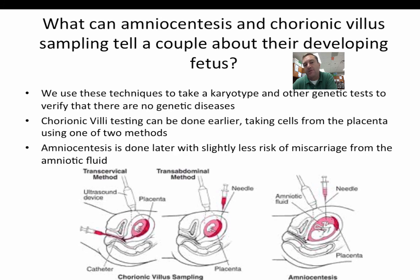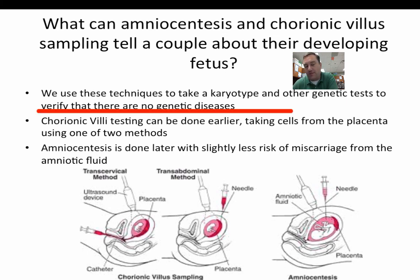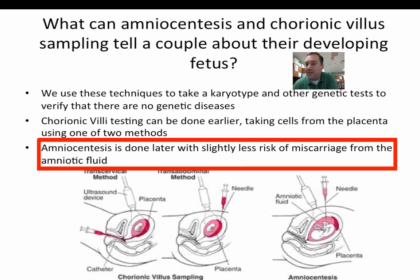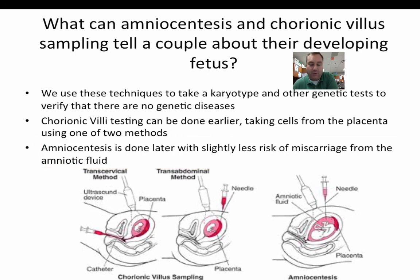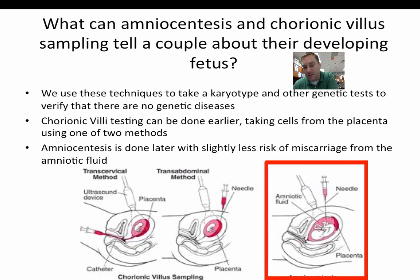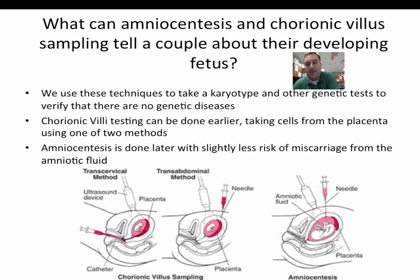The last topic was amniocentesis and chorionic villus sampling — two tests you'd want to do only if indicated by an ultrasound or other blood work. Both are trying to get cells from the fetus for a karyotype or other genetic testing. Chorionic villus sampling can be done earlier and gets more cells from the placenta, but carries a slightly higher risk of miscarriage. Amniocentesis is done later with less miscarriage risk, but gets fewer cells — those that have fallen off the fetus and are floating in the amniotic fluid.